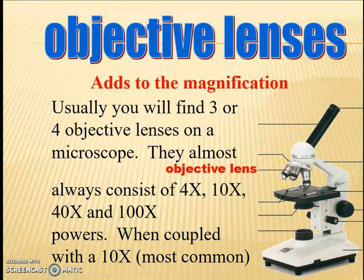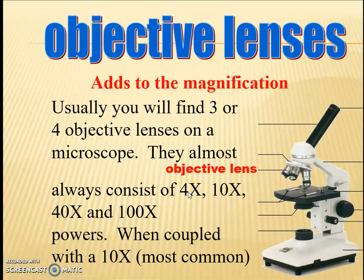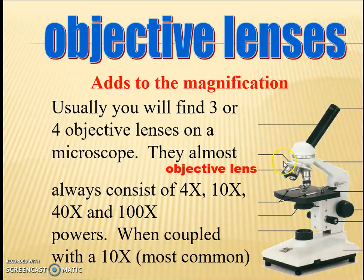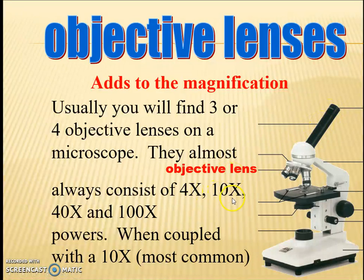The objective lenses — in our class we are going to use three, with magnifying powers of 4x, 10x, 40x, and 100x. We will start with 10x, 40x, and 100x. The nose piece has a 10x power, so whatever objective you are using, you multiply it by 10 to get the total magnifying power of the lens.